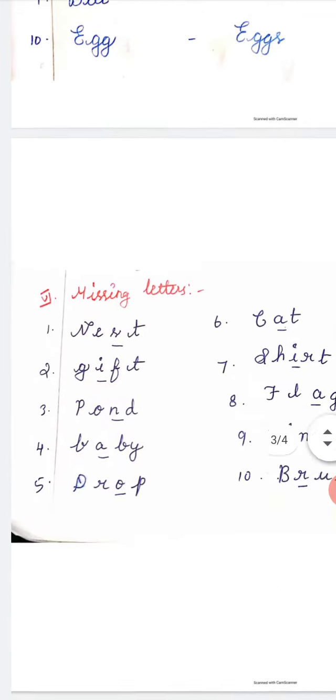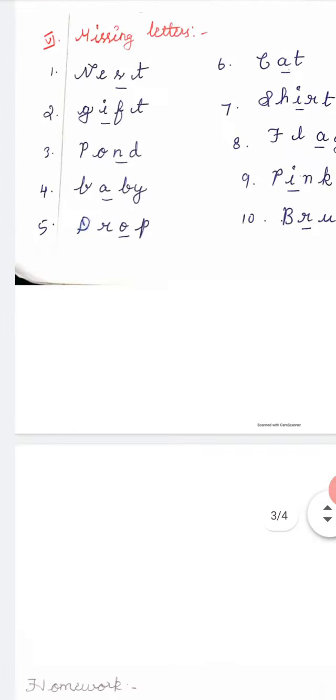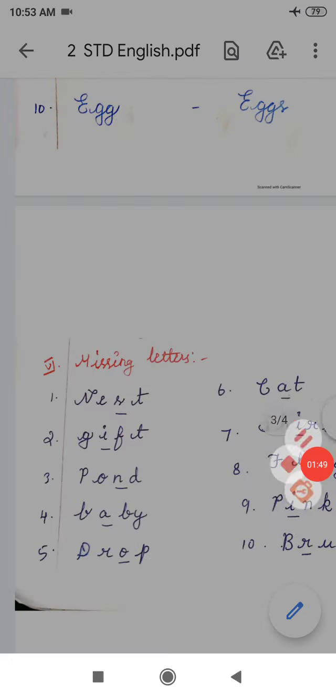Today's homework, you have to write this. Read and write this. Singular plural and missing letters. Okay students, thank you.